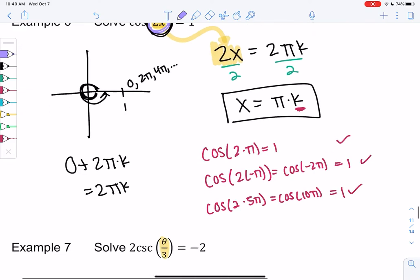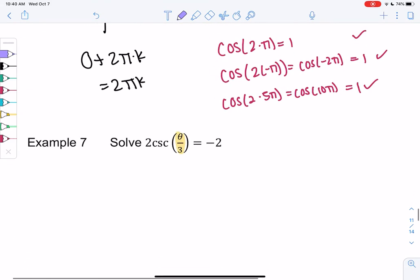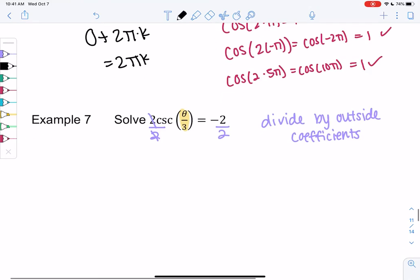So let's try this one more time. This one also has an inner function, right? Theta over 3. We are allowed to divide by the 2. So you can divide by the outside numbers, not the inside numbers. Outside coefficients. The 3 is kind of trapped inside this function, but the 2 is free to go to the other side. So we get cosecant of θ/3 equals negative 1.